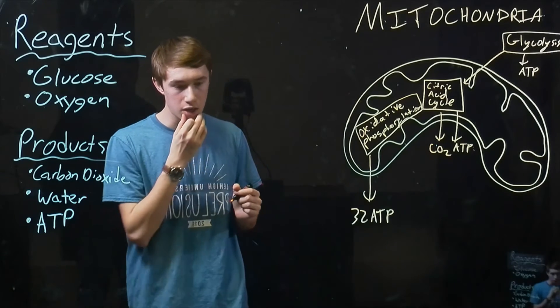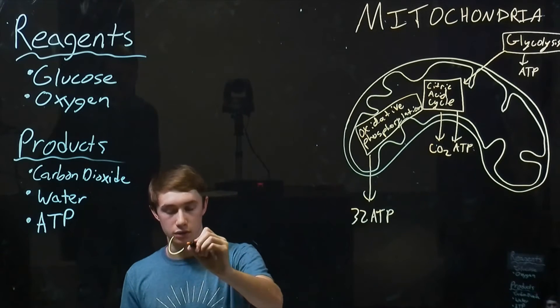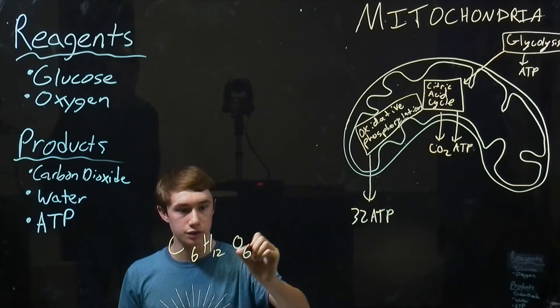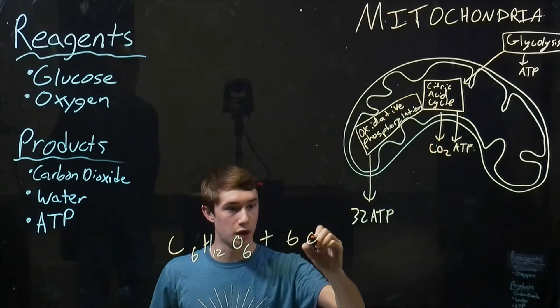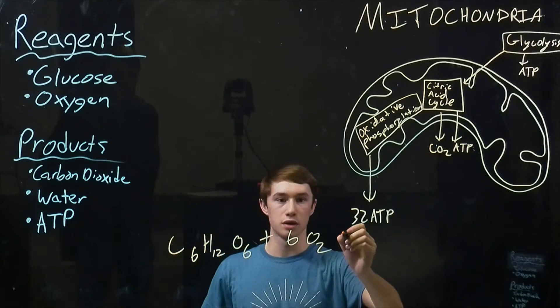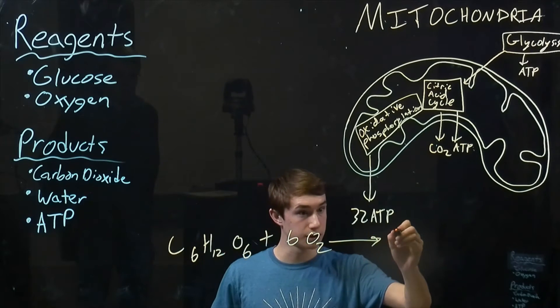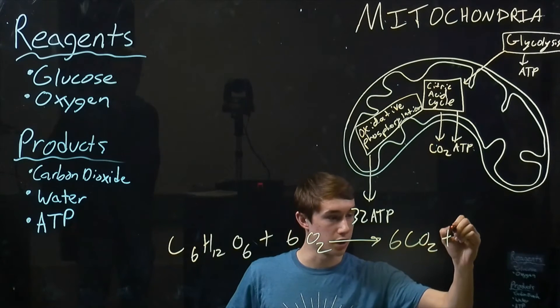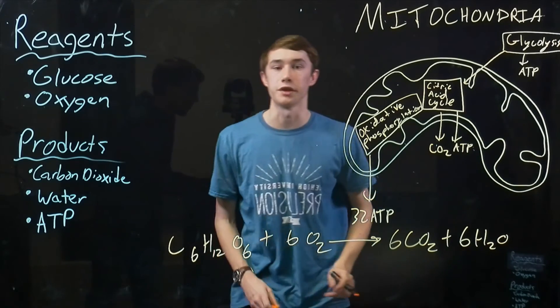So our chemical formula is actually going to be glucose, C6H12O6, reacts with six oxygen gas molecules to create six CO2 and six H2O. And yeah, that's basically it.